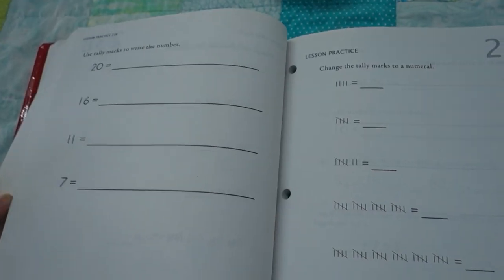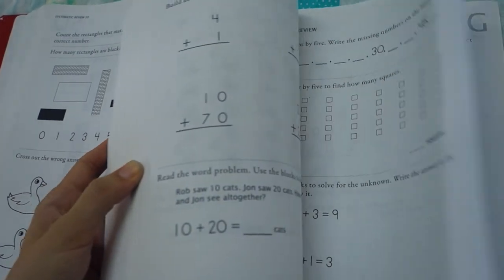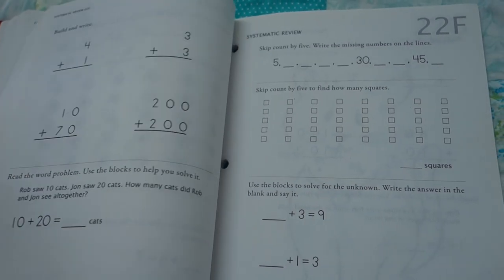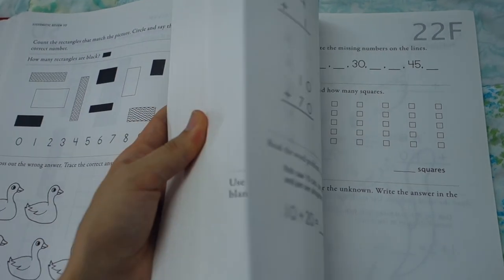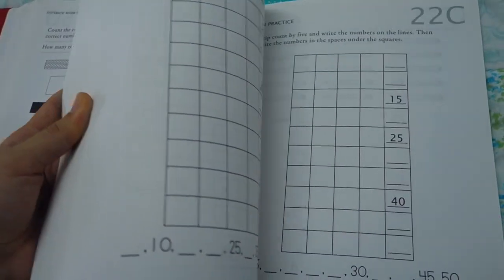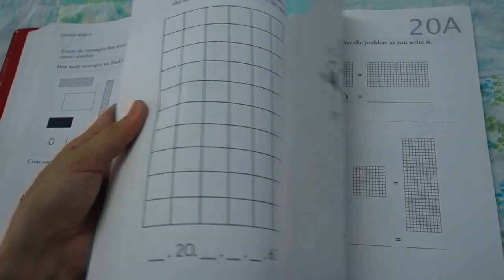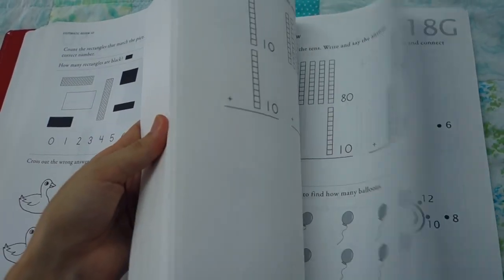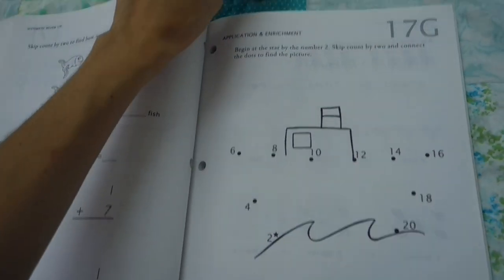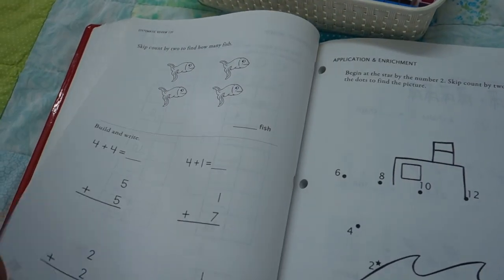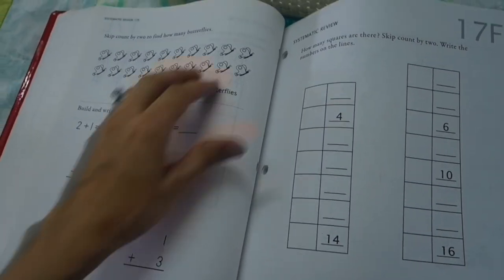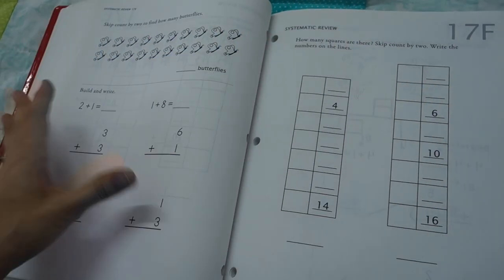Now, later on in the book, we get into some other foundational concepts. We have our tally marks. We have tens and hundreds. We have some counting by fives, different types of skip counting. Later on, trying to show you a good look inside here so that you can know what to expect towards the end. We're adding hundreds, counting by tens, adding tens. Everything is very visual. You are constantly including these within the lessons.